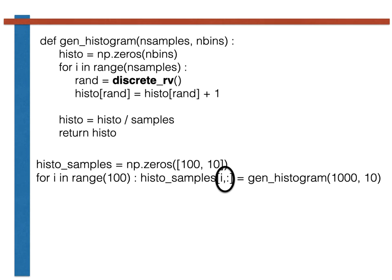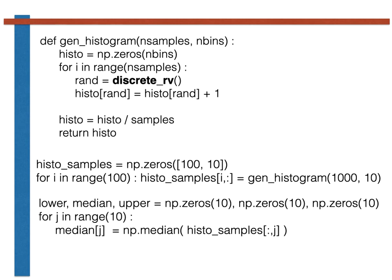Once these commands have executed, we thus have 100 estimates in the 2D numpy array called histosamples for the probabilities of getting the various random variable values. The code that is shown here demonstrates how we can extract a median from these various samples.